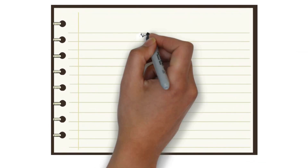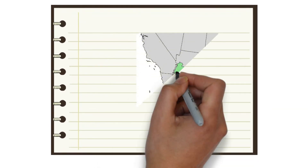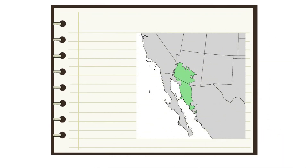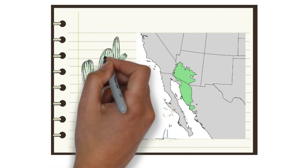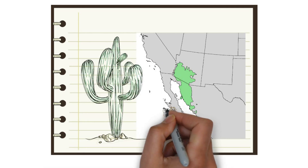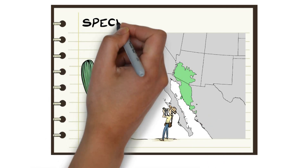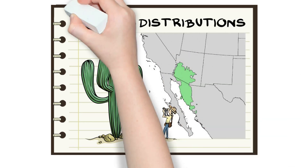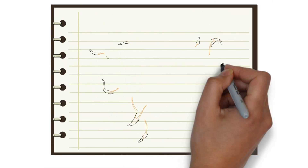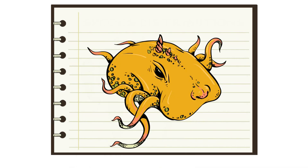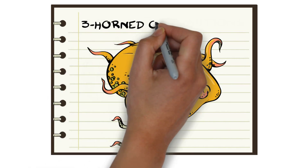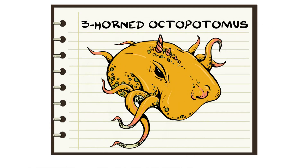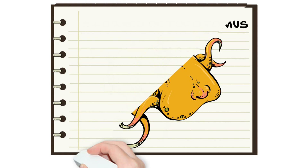In this video we will explore one of the most basic questions in ecology: why are species present in some areas and absent in others? What, for example, might explain the restricted geographical range of the three-horned octopotamus?